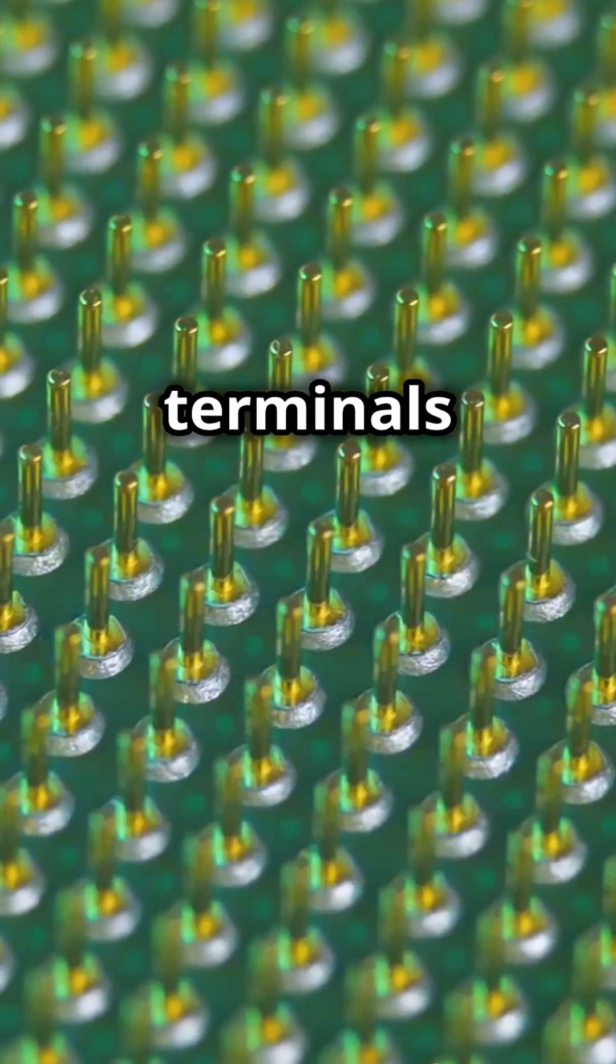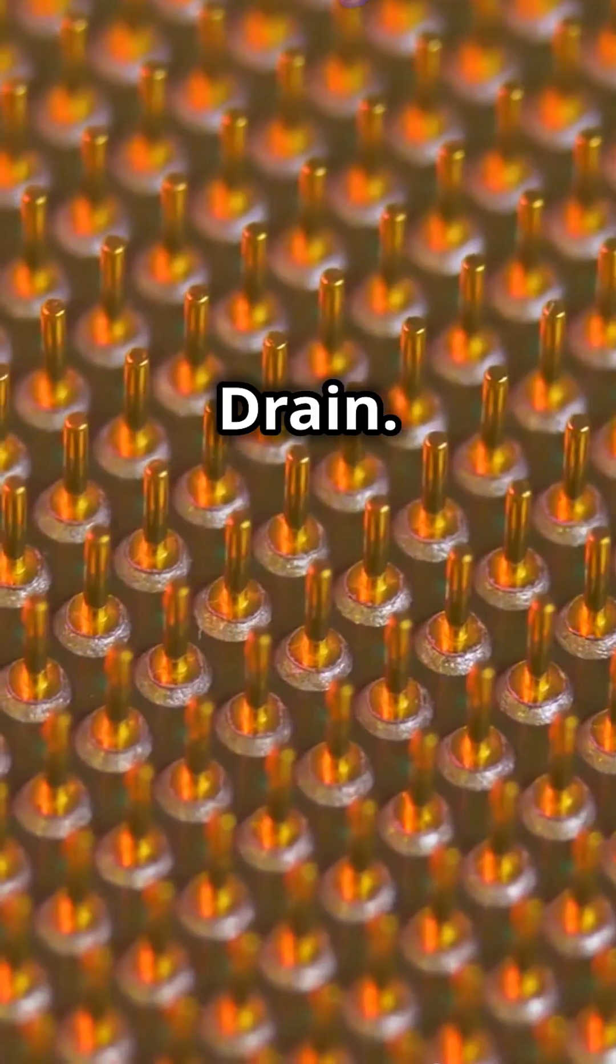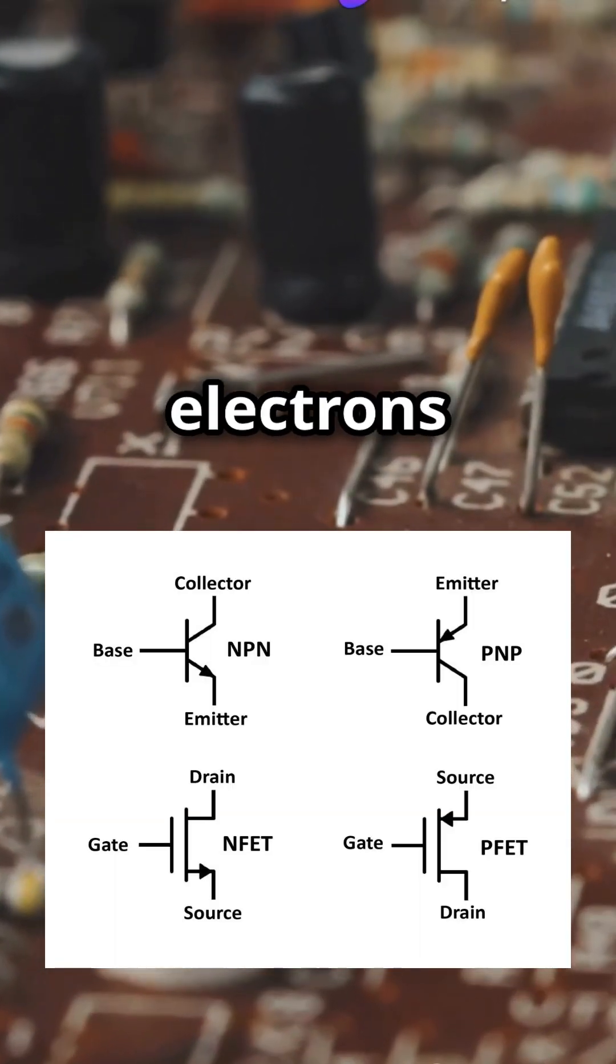FETs also have three terminals: source, gate, and drain. These control the flow of electrons in a slightly different way.